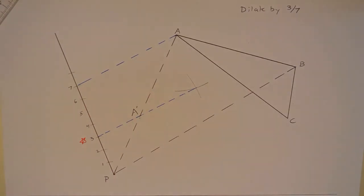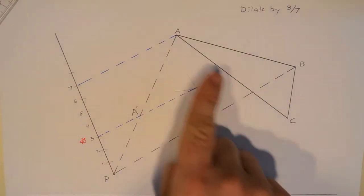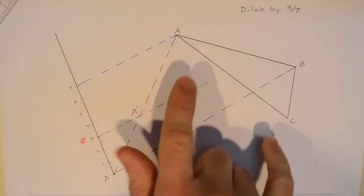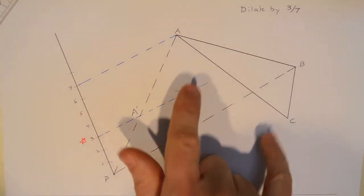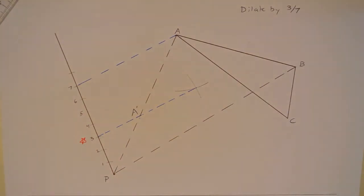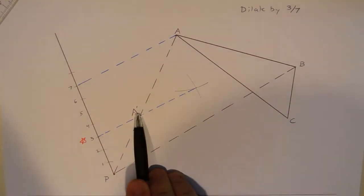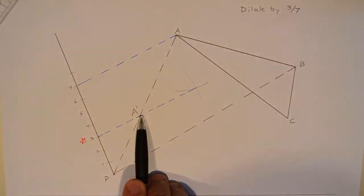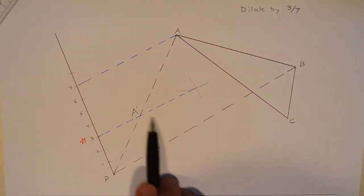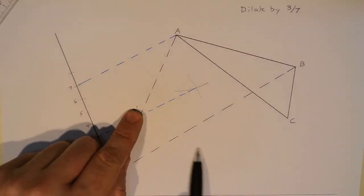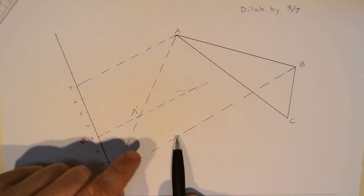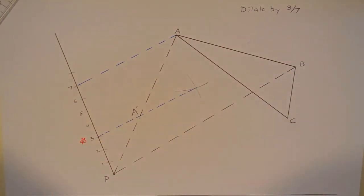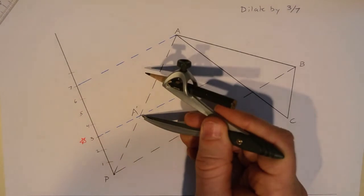And now I have to figure out where three-sevenths is there. But I'm going to take advantage of the fact that in a dilation, lines remain parallel to their image. So AC isn't going to be the same length as A prime, C prime, but AC will be parallel to A prime, C prime. So if you imagine A prime to A to C being one half of a parallelogram, I'm going to create the other half of the parallelogram that's going to give me a line parallel to AC. And where it intersects with the line PB is going to be B prime.